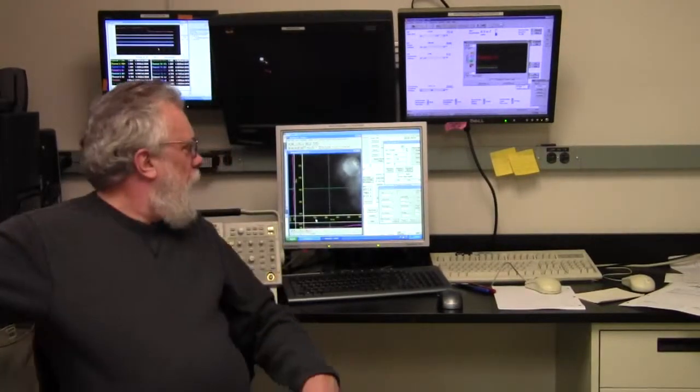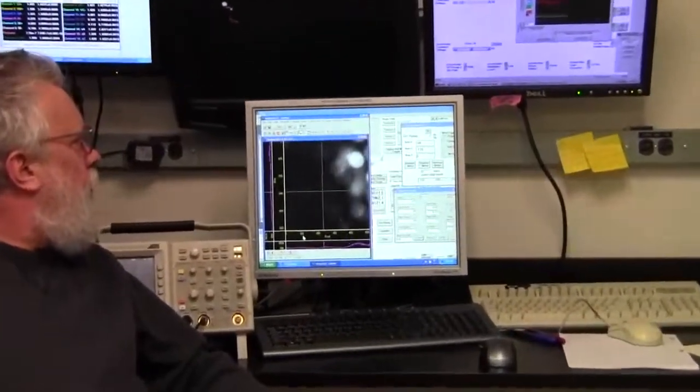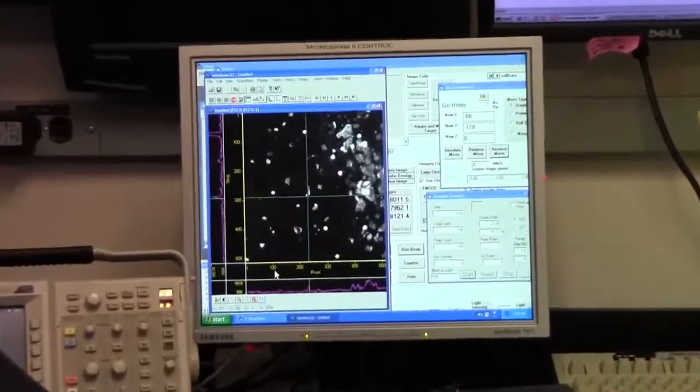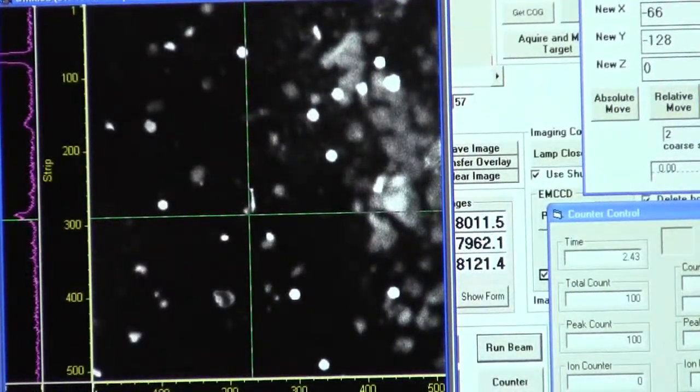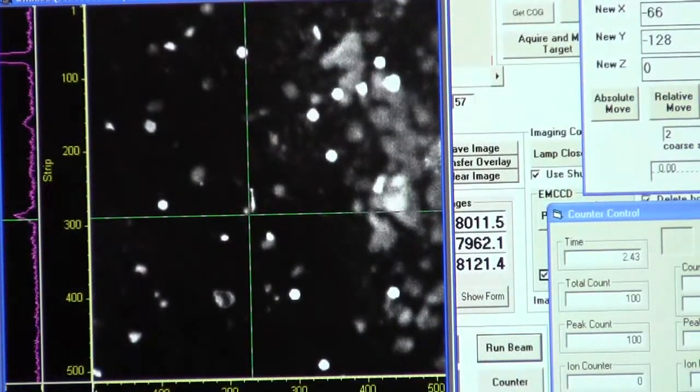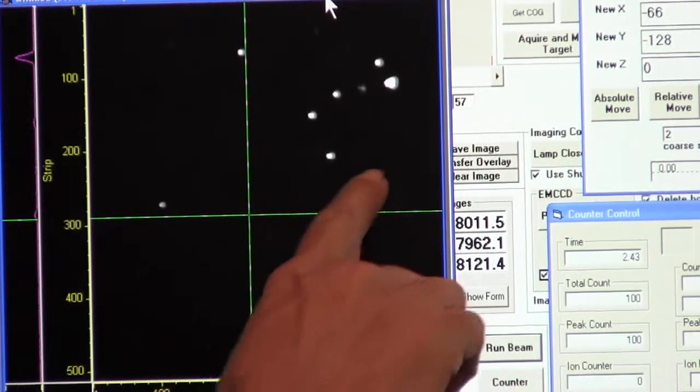So now we've exchanged the knife edge dish for one that has fluorescent beads on it and let me focus the microscope a little bit. So the bright spots here are the fluorescent beads. Let me adjust the intensity.